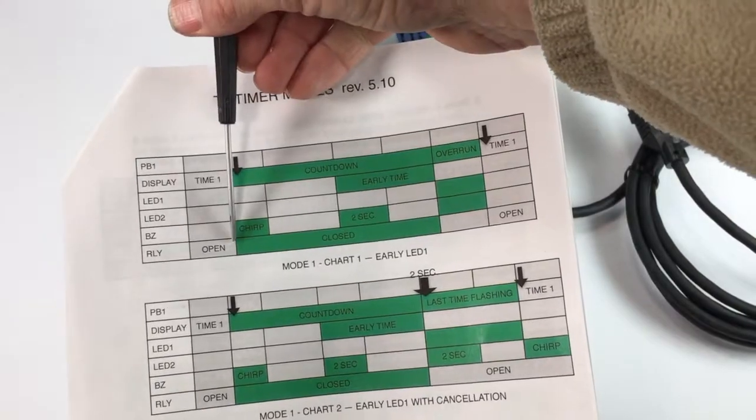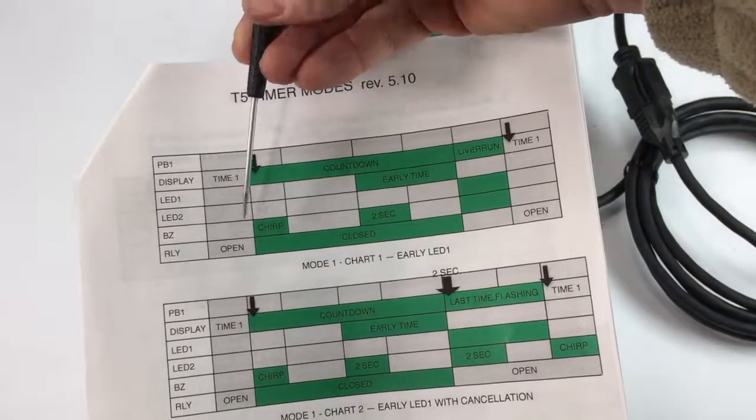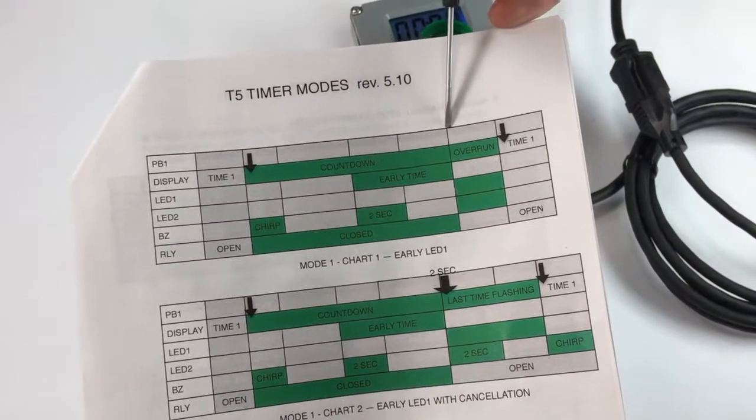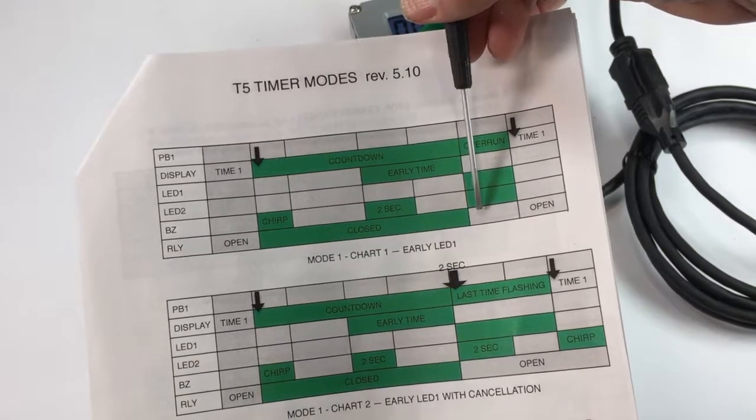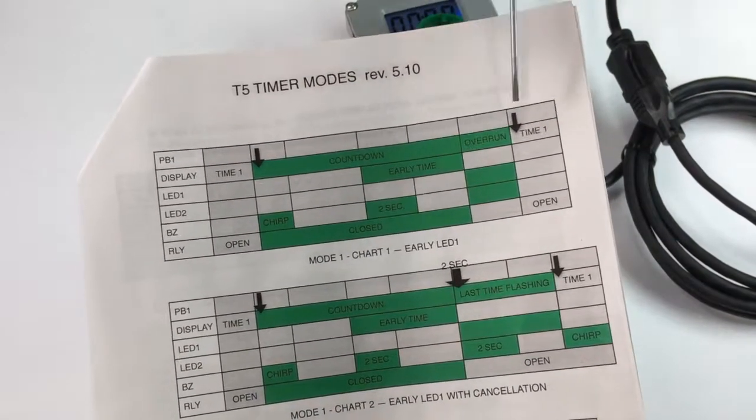You can see that the relay changes state. Actually, the relay is closed, which means the valve is open until the time cycle ends. Then the relay opens, which means the valve closes.